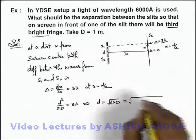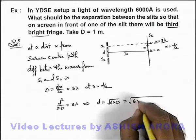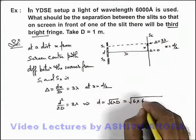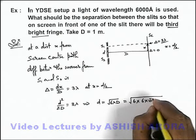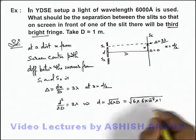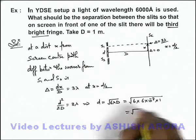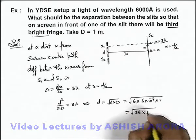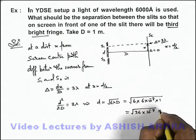On substituting the values, this will be root of 6 multiplied by wavelength 6 × 10⁻⁷ meter and separation is 1. So this will be root of 36 multiplied by 10⁻⁷ meter.